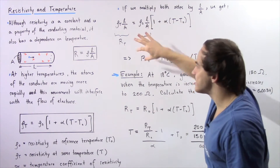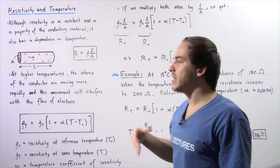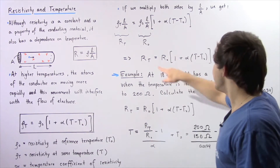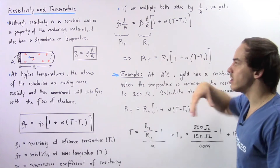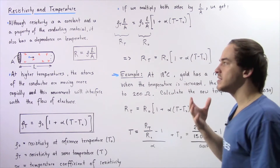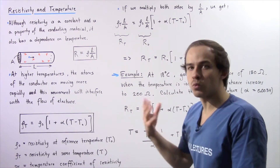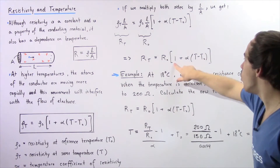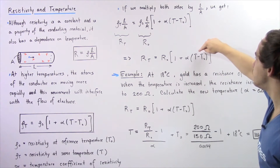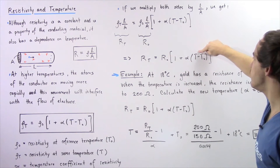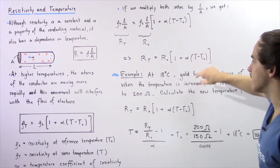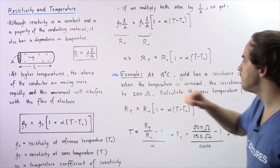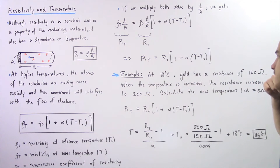The resistance of our conducting material at that particular temperature is equal to the resistance of that same material at some reference temperature, multiplied by 1 plus α multiplied by T minus T₀. So let's use this equation in the following example.